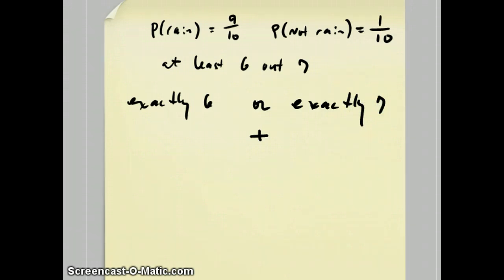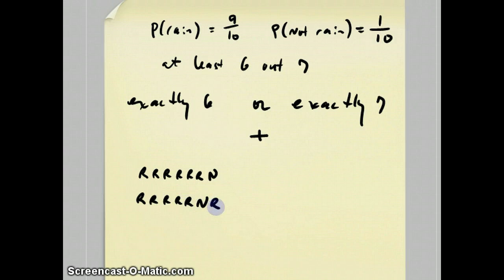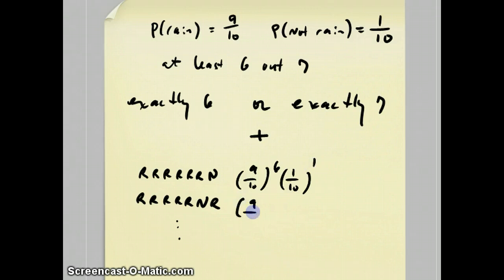Getting exactly six days of rain out of seven days — the idea is there are a lot of ways for it to happen. For instance, you could have rain, rain, rain, rain, rain, rain, and then no rain. Or you could have rain, rain, rain, rain, rain, no rain, rain. Each of these individually would have a probability of nine tenths to the sixth power times one tenth to the first. And even though it's in a different order, when you combine the common things, you get the same result.